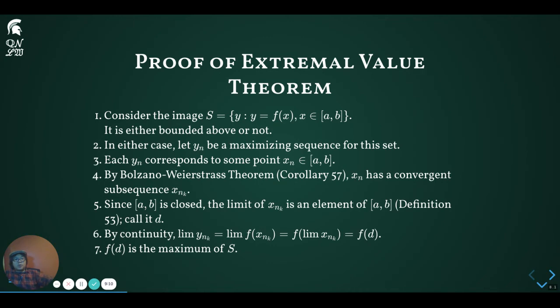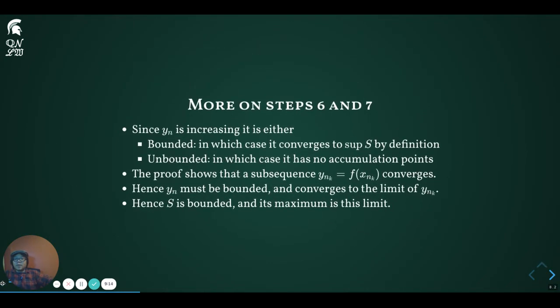The final two steps in the proof could use a bit more explaining. In the previous slide, we argued that f(d) is the global maximum, because it is the limit of the sequence y_(n_k). Now, if it were the limit of the maximizing sequence y_n, then by design, its limit would be the supremum of S, if it has one. And we will be done. But no, we only know that f(d) is the limit of a subsequence, so we have to do a little bit more work to justify this. Again, we split into two potential cases.